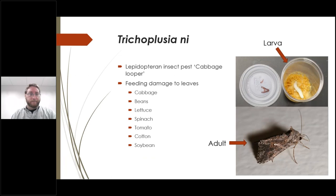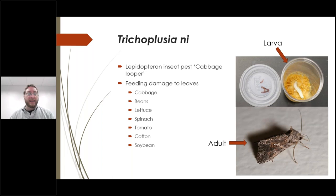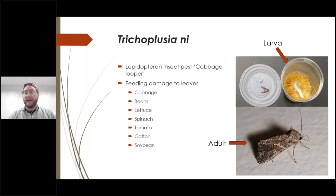The second player is the insect pest, the cabbage looper Trichoplusia ni, which can feed on a number of crops including cabbage, beans, lettuce, spinach, tomato, cotton, and soybean. We utilized this insect because it can be a pest on a number of important crops. In the upper right-hand corner, you can see a larva feeding in an insect feed cup with a general purpose lepidopteral diet, where it will feed, pupate, and eventually emerge as an adult.